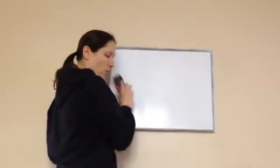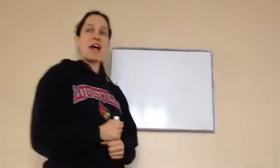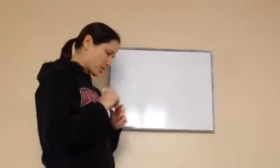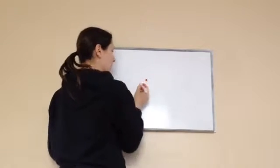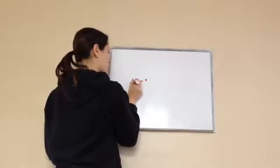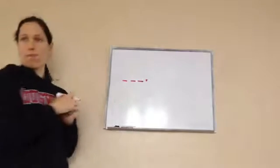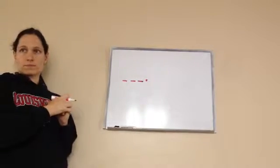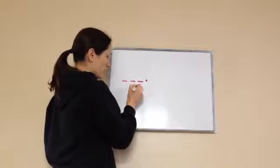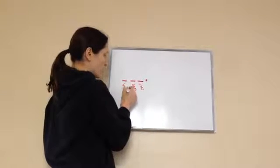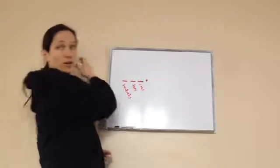Fifth grade lesson 106, this is on reading and ordering decimal numbers through ten-thousandths. Let's quickly review — I'm going to put a decimal, and let's tell me what those three are: ones, tens, hundreds. Ones, tens, and hundreds — remember it just keeps going on and on.